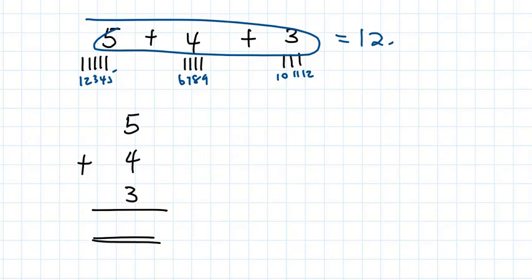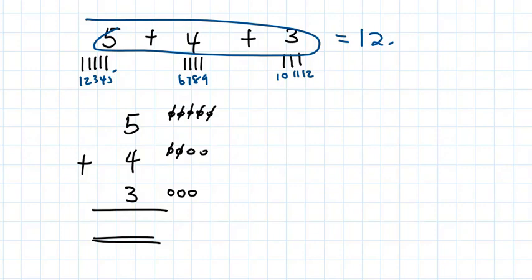If I were to use circles for the vertical arrangement, I'd draw one, two, three, four, five circles; then one, two, three, four; then one, two, three. Counting them all: one through twelve. I get twelve.